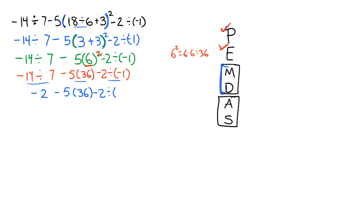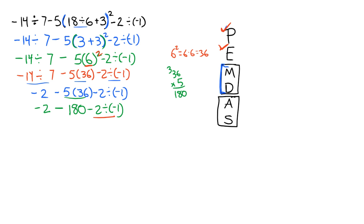Minus 2 divided by negative 1. Don't lose this subtraction or negative sign. Next step, we have to do this final division. 2 divided by negative 1 is actually just negative 2. But don't lose this subtraction sign. Drop the rest down. Notice how, again, this has a nice flow downwards.